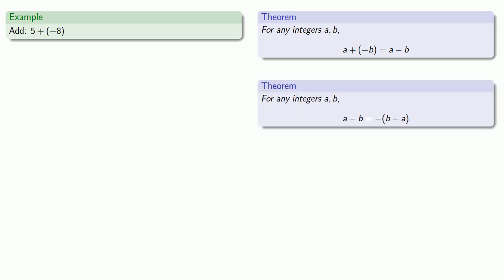a minus b is the additive inverse of b minus a. So let's see which of these applies: 5 plus the additive inverse of 8. Well that looks like this first theorem and so we know that we can rewrite this as 5 minus 8.